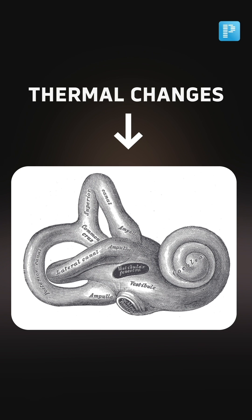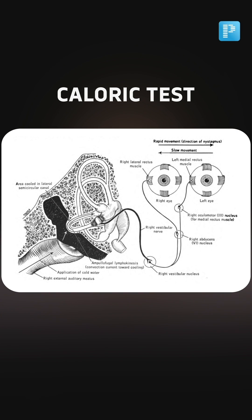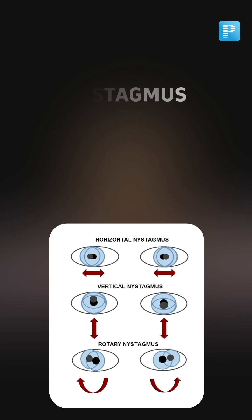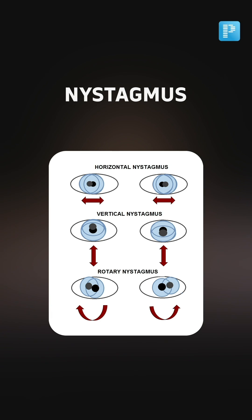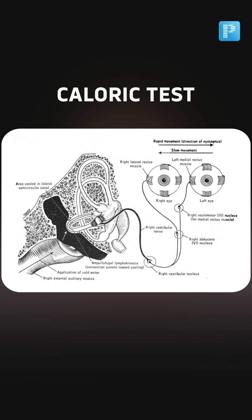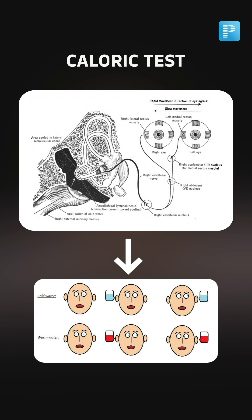This class is going to cover how thermal changes cause stimulation of the labyrinth. The test we use for assessing the vestibular system is the caloric test. Let's see what happens in this caloric test and why we get an ocular movement like nystagmus. The core principle is understanding how thermal changes will stimulate the labyrinth.